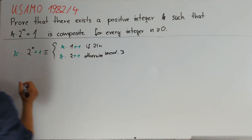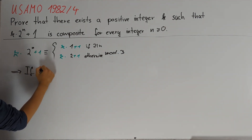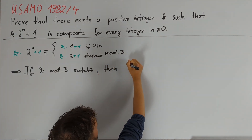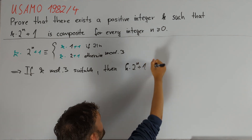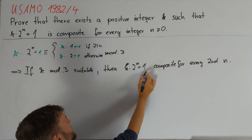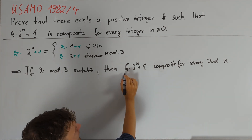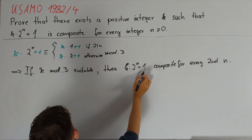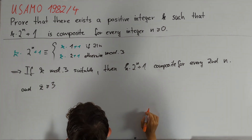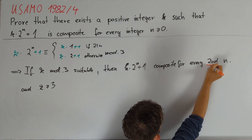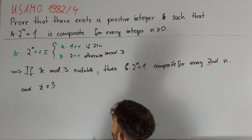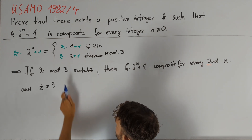In conclusion, we have found that if we choose k in a suitable residue class modulo 3, then for every second n we have that k times 2 to the n plus 1 will be composite. Note that divisibility by 3 only implies compositeness if this number is larger than 3, so we need k greater than or equal to 3. Now we have found a way to make sure every second term of our sequence is composite. To cover the rest, we look at divisibility by small primes other than 2 or 3.